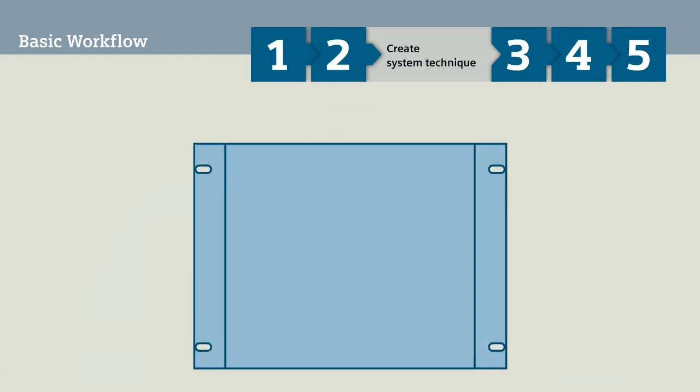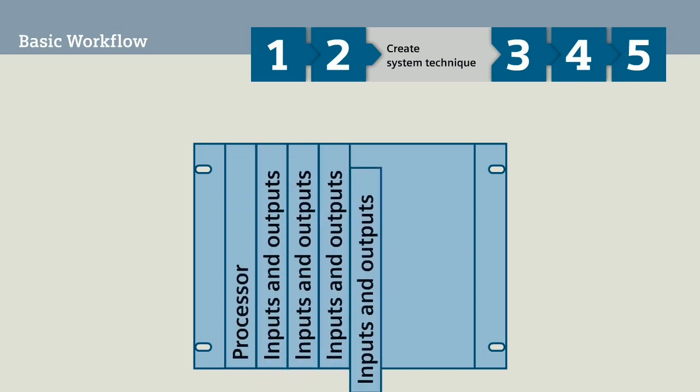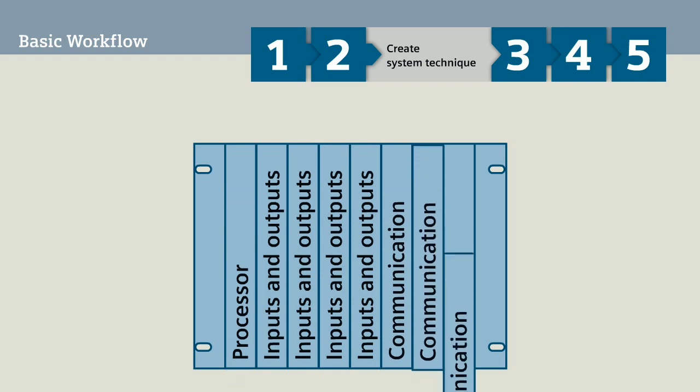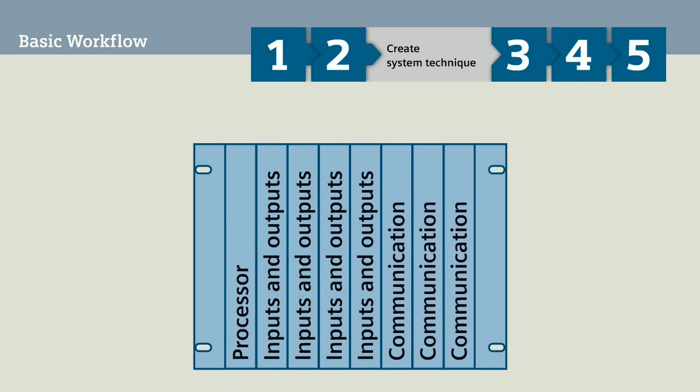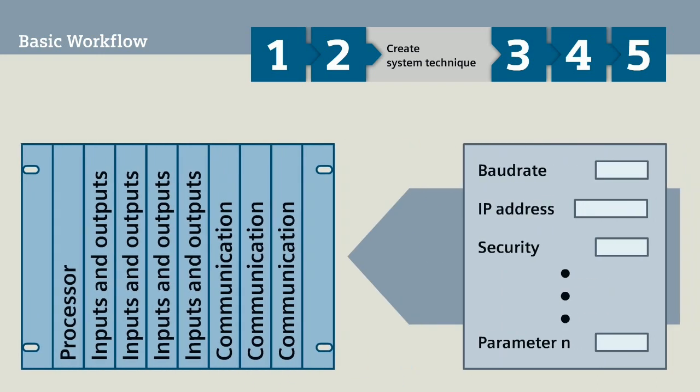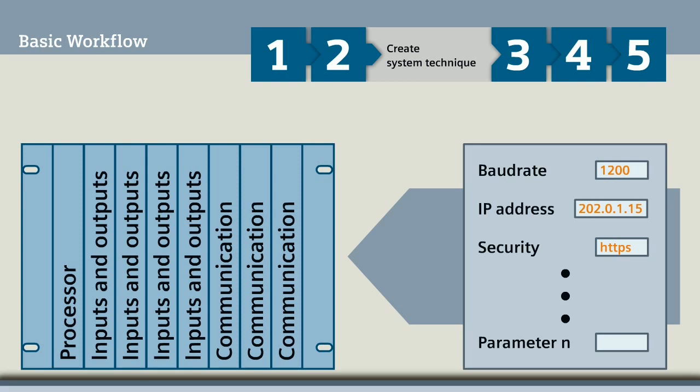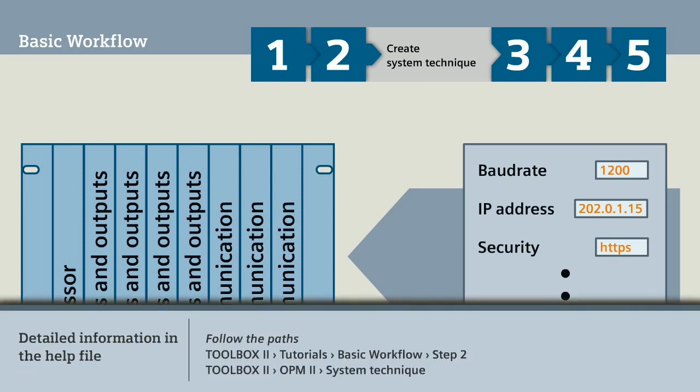First, you insert an automation unit in your project. You equip this automation unit with a processor module, with I/O modules, and with communication modules. After that, you parameterize the completely equipped automation unit. Typical parameters are baud rate, IP address, or security. You can find detailed information about system technique in the help file via the displayed path.